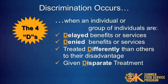Discrimination can be easily remembered by thinking of the four Ds. Discrimination is when an individual or group of individuals is delayed receiving benefits or services that others receive, denied benefits or services that others receive, treated differently than others to their disadvantage, or given disparate treatment — something which does not seem discriminatory but has a discriminatory impact in practice.